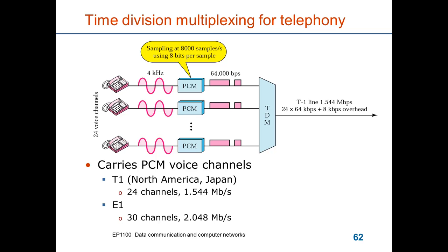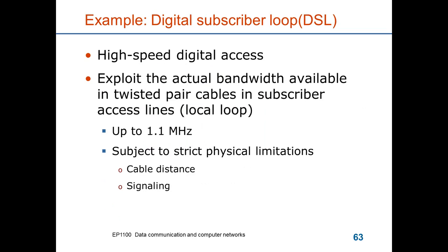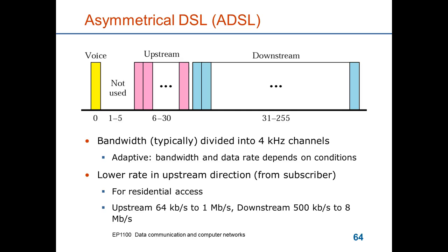Here's another example, the digital subscriber loop. This is a high-speed digital access that uses the old telephone wires that go into most homes. It uses the actual bandwidth in the twisted pair cable in the subscriber access lines. Even though an analog voice call was only 4 kHz in bandwidth, the cables permit up to over megahertz in bandwidth. The bandwidth of the medium is subject to strict physical limitations. It has a high attenuation, so you can only go short distances, and it requires advanced signaling.